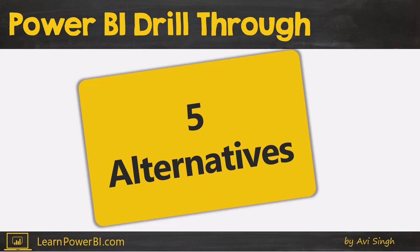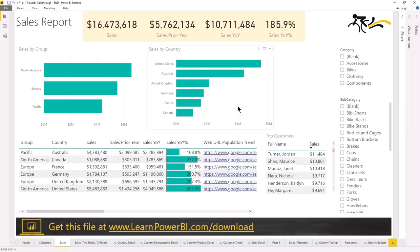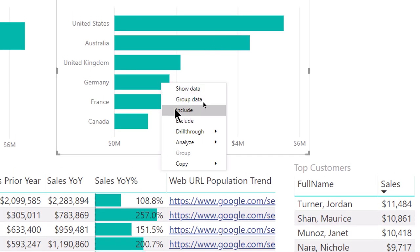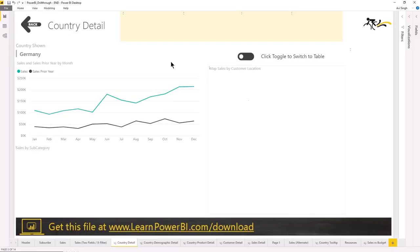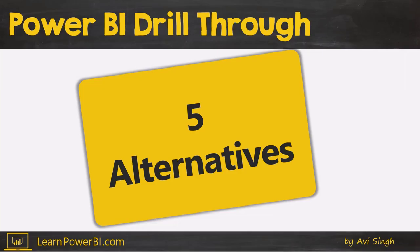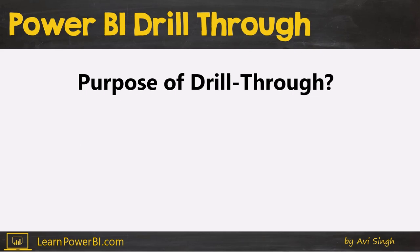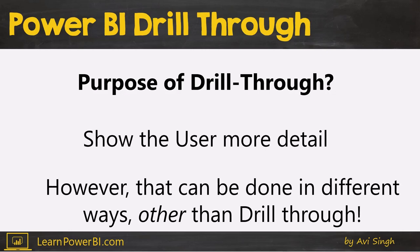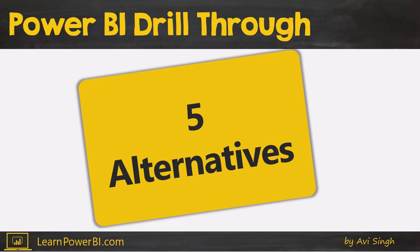Before we take a look at the alternatives, let's take a quick look at drill-through. Drill-through is simple. Once enabled, you can right-click on an element and choose a drill-through option, which takes you to a more detailed page. Here I'm selecting Germany, drill-through country detail, and that takes me to a different page with that selection already made. I can see all the detail about Germany — the trends, transactions — and this could be whatever you build. The purpose of drill-through is simply to show the user more detail.